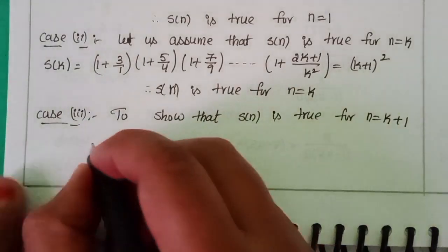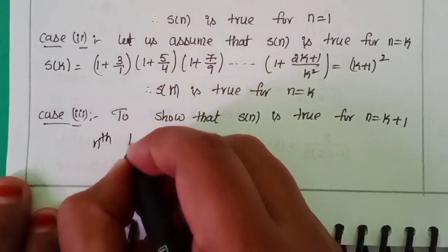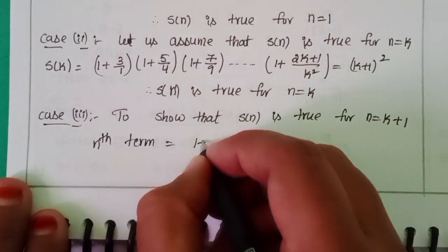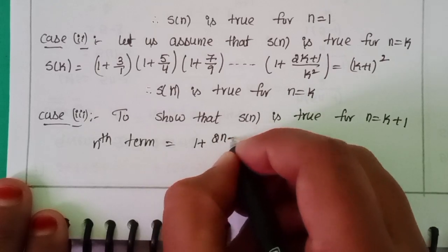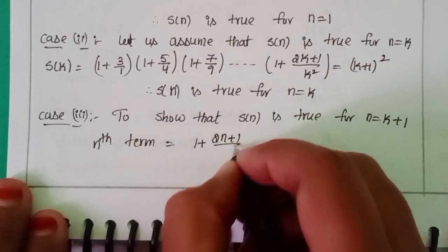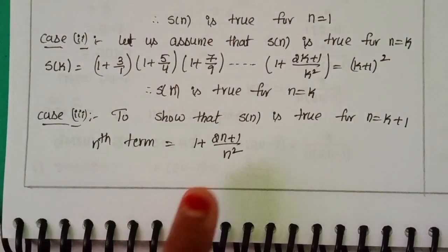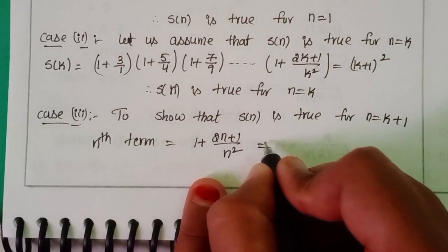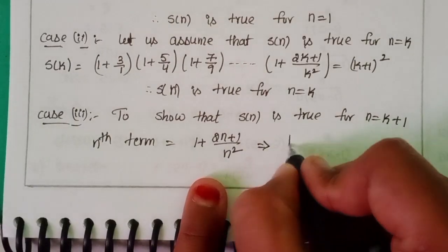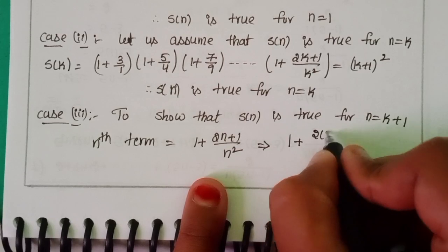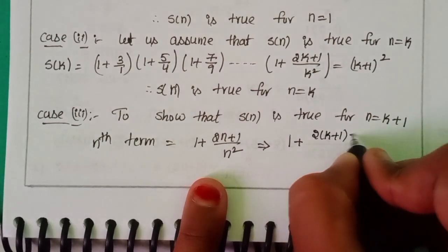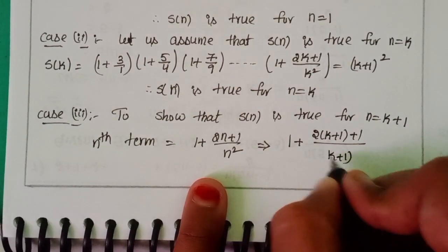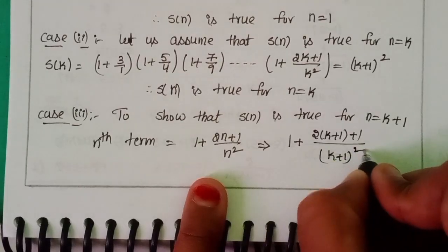Case 3: We need to show S(n) is true for n = k+1. First, find the (k+1)th term. The nth term is 1 + (2n+1)/n². Substitute n = k+1: 1 + (2(k+1)+1)/(k+1)².